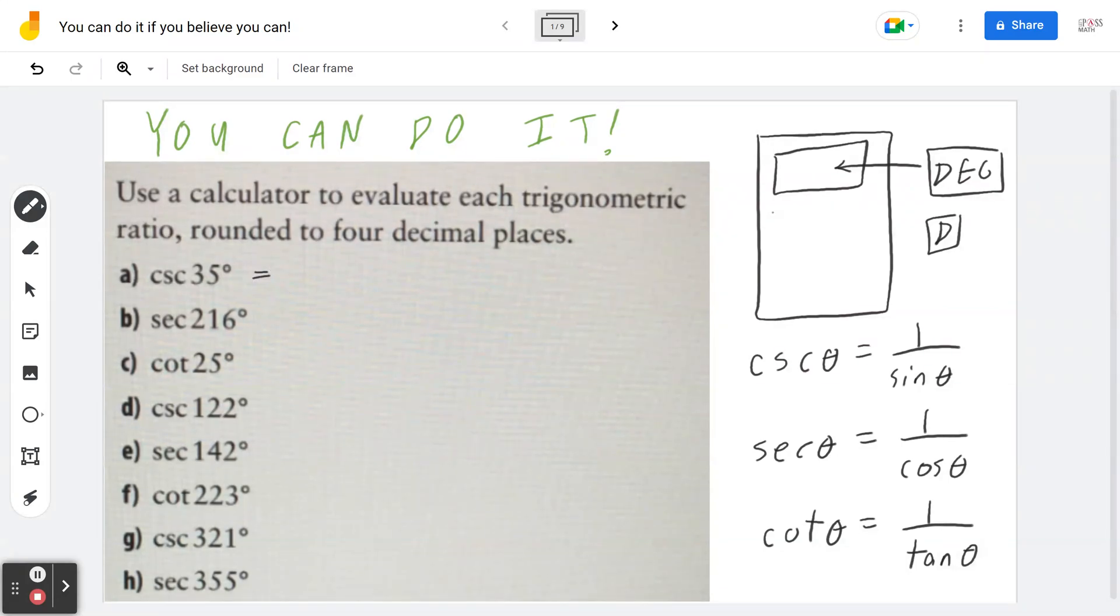So in the first part, part A, cosecant of 35 degrees, that's the same as taking one divided by sine of 35 degrees. So I grab the calculator, press one divided by sine of 35 degrees, that's going to be approximately 1.7434, if I round this to four decimal places.